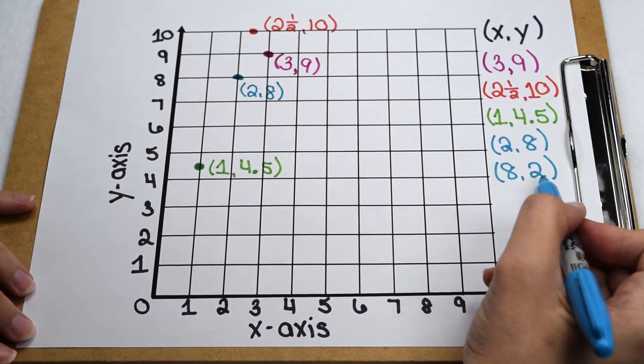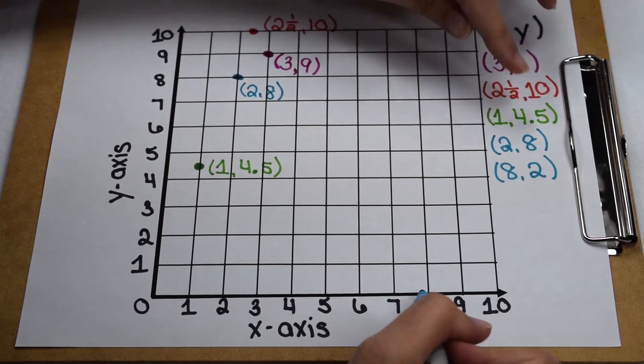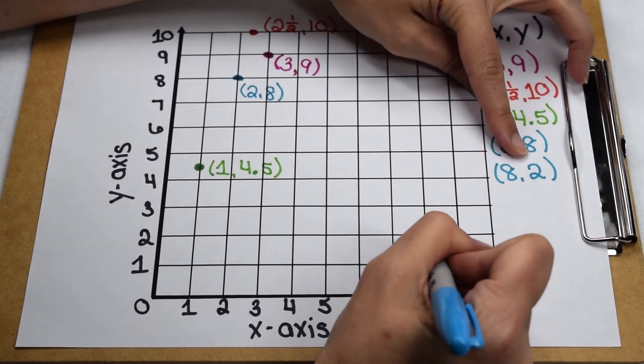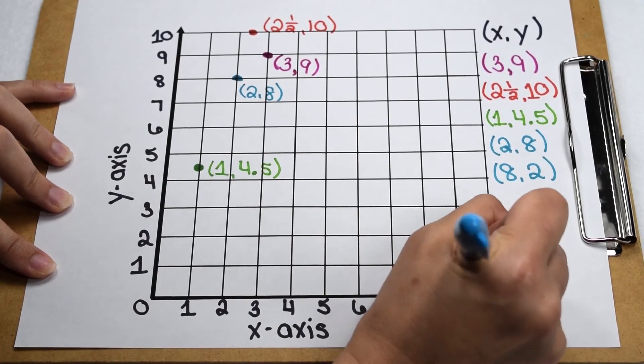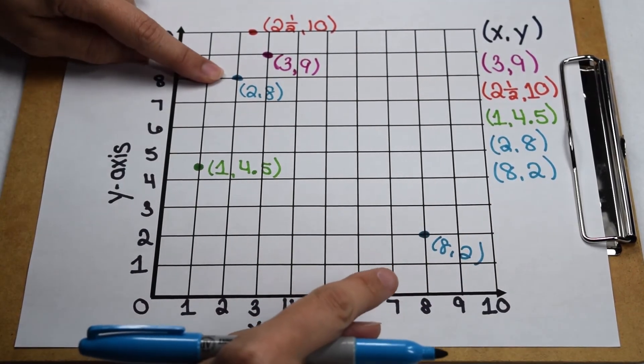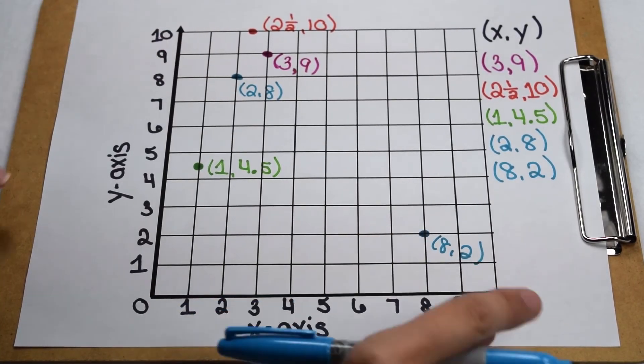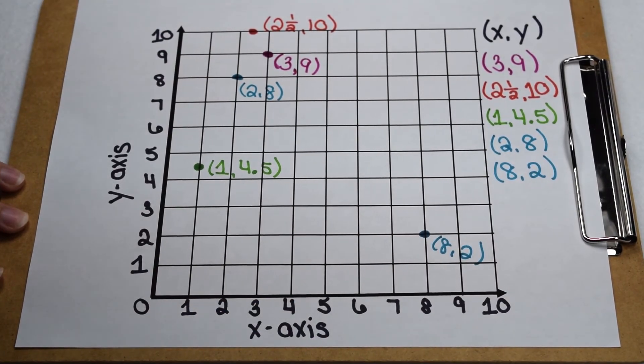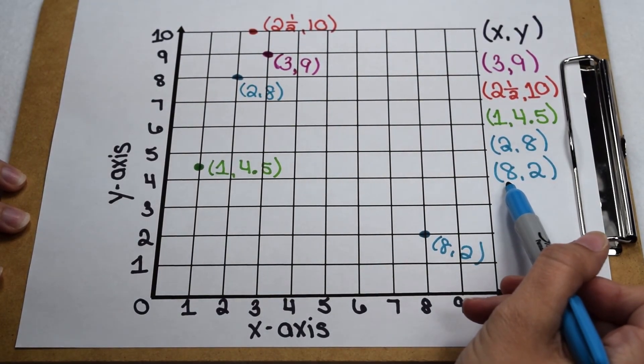On the other point, eight, two, I'm first going to go across eight places on my x-axis, and then up two places on my y-axis. When I look at these two points, I notice that even though they use the same values, two, eight, and eight, two are not in the same location. When we're plotting points on a coordinate plane, it's crucial we pay attention to order. Our x-axis always comes first with our x-value. Our y-axis always comes second with our y-value.